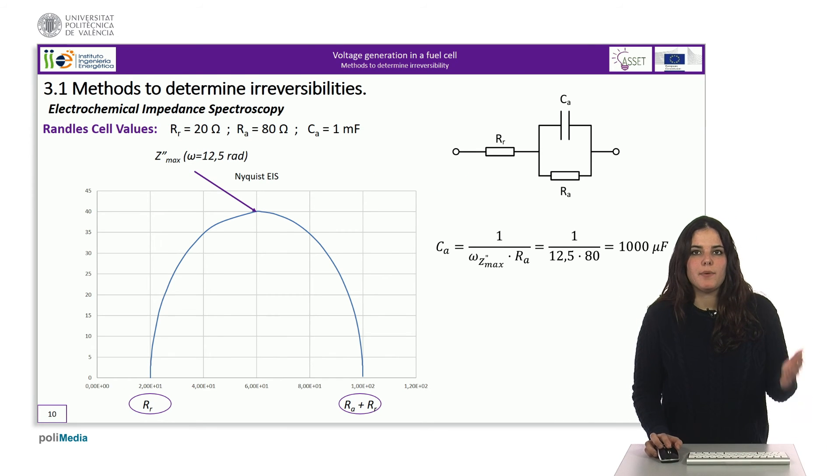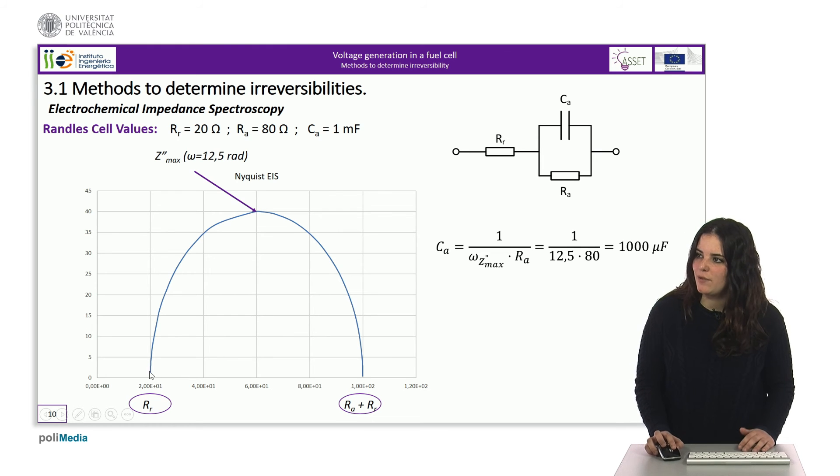If we use the same example as that used for the current interruption method, the resulting Nyquist diagram is that of the figure. We can see now that the left part is 20, which corresponds to R R. The right part is 100, which corresponds to the sum of R R and R A, and that the pulse at which the maximum impedance is produced is 12.56 radians, so that the C A results in one millifarad.